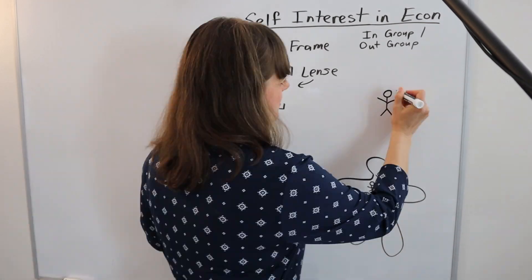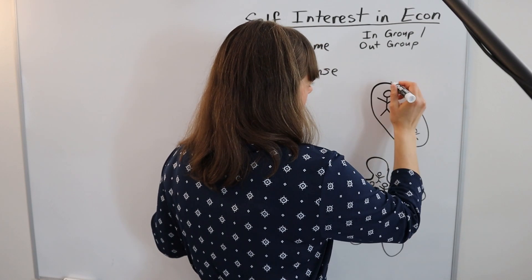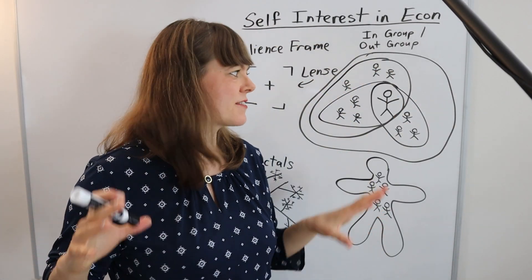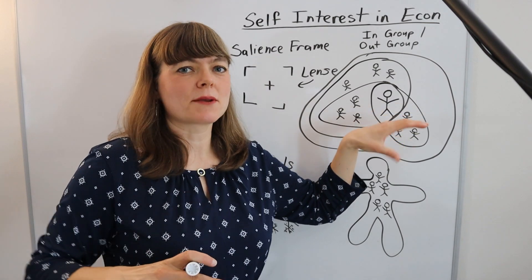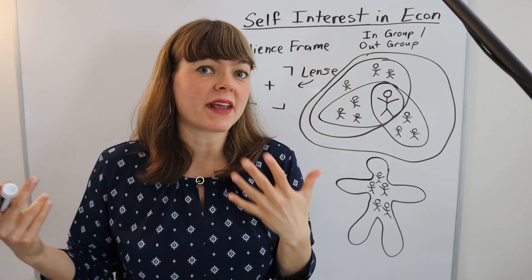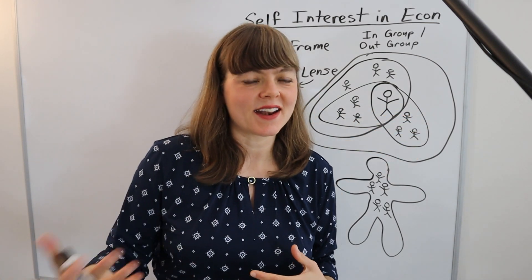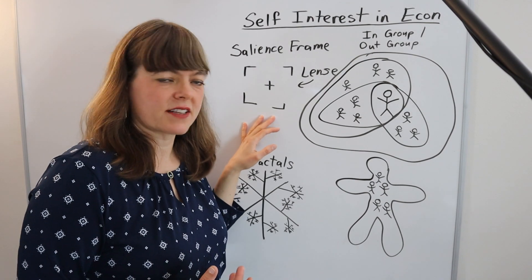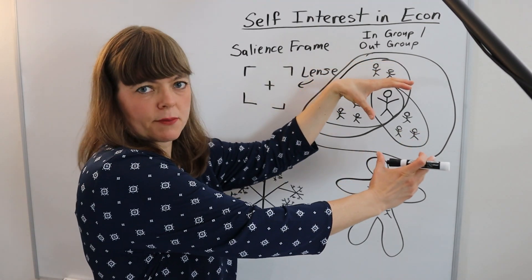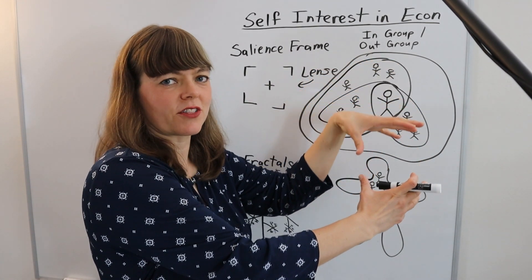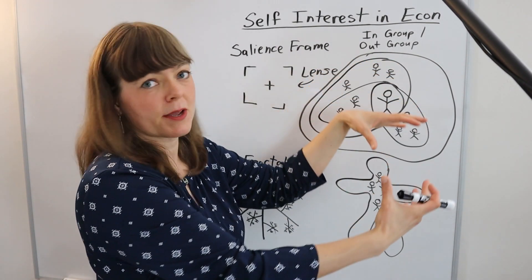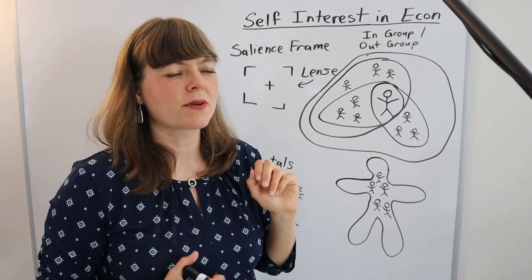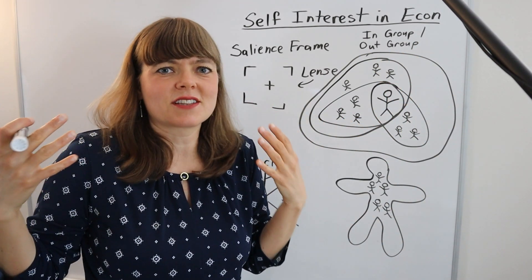You can imagine tons of different circles that one person's self-interest might include at any given point in time. It's relevant to think about salience frames, because sometimes a person is focused on their family and doing what's best for their family, sometimes it's the industry, sometimes a larger group — and what determines that involves the concept of a salience frame.